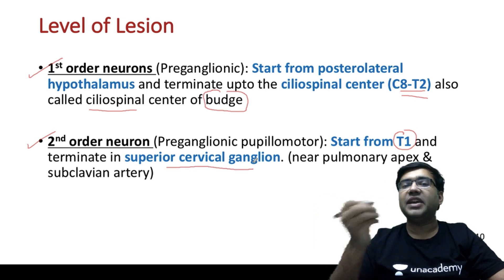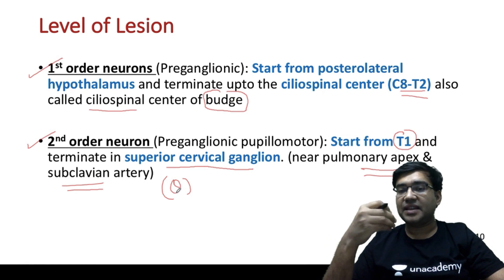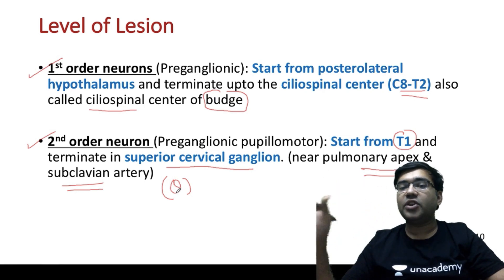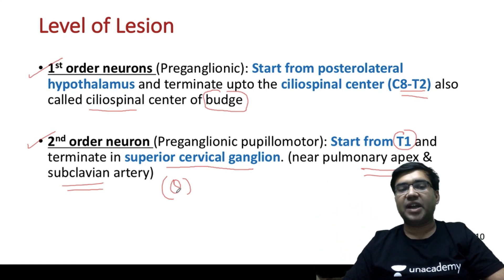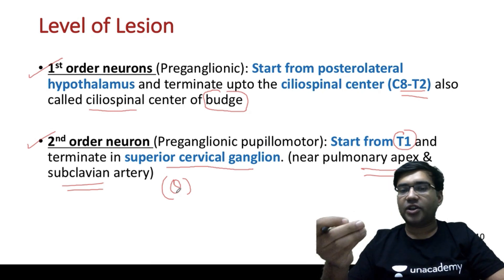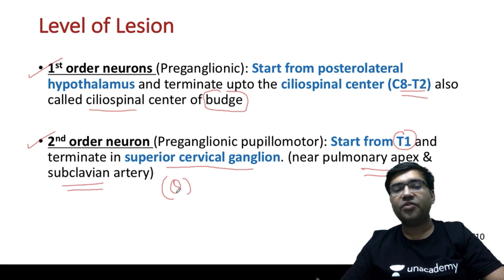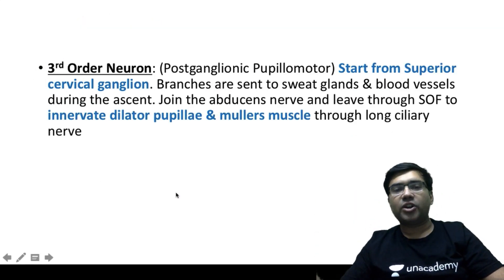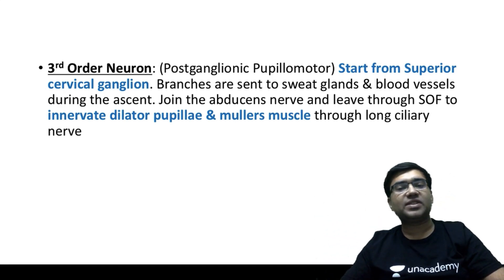Remember that the second order neurons come in the vicinity of the pulmonary apex and subclavian artery. This is important because a Pancoast tumor or dissection or aneurysm of the subclavian artery would affect the second order preganglionic pupillomotor fibers. The third order neurons are the postganglionic pupillomotor fibers, starting from the superior cervical ganglion and sending branches to the sweat glands — which is why there is anhydrosis when this part is involved.